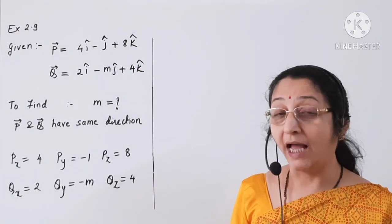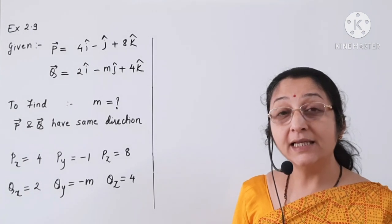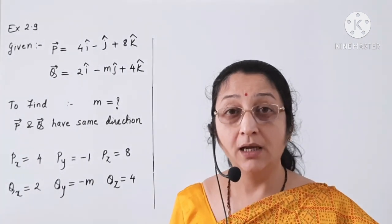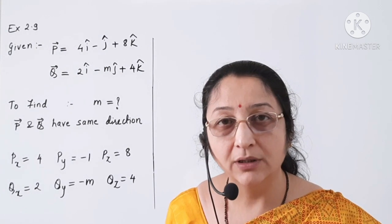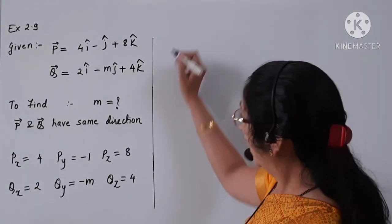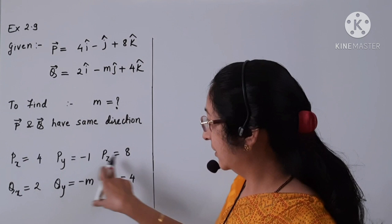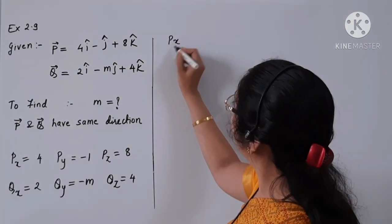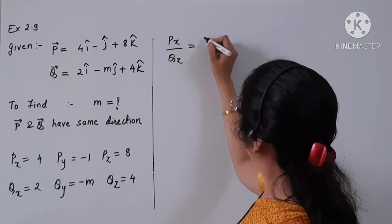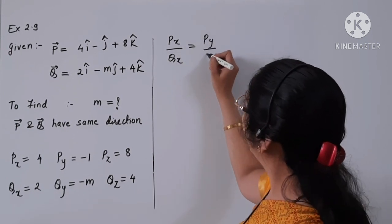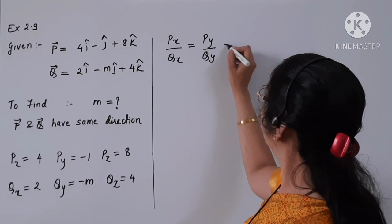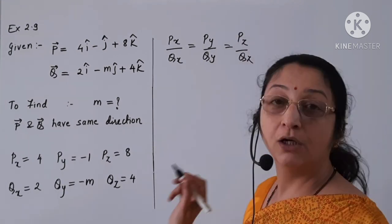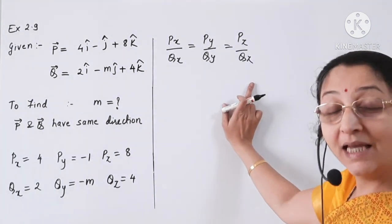When two vectors are in the same direction, their corresponding components must be in proportion. That is, these components should satisfy: px upon qx is equal to py upon qy, which is equal to pz upon qz. All components are in the same proportion.